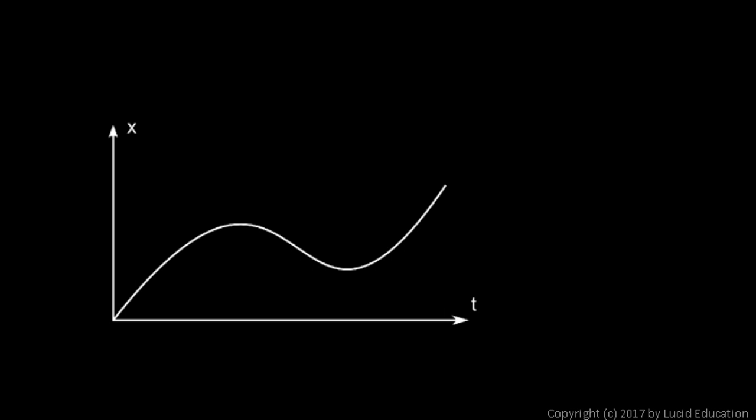Sometimes we want to find the velocity at a particular moment rather than the average. For example, what if we have this moment in time at five seconds, corresponding to this point on the graph, and we want to know how fast it's moving at that particular instant? There's no time interval here — instead we have one particular instant, and we want to know the velocity at that moment. We need the slope at that point.